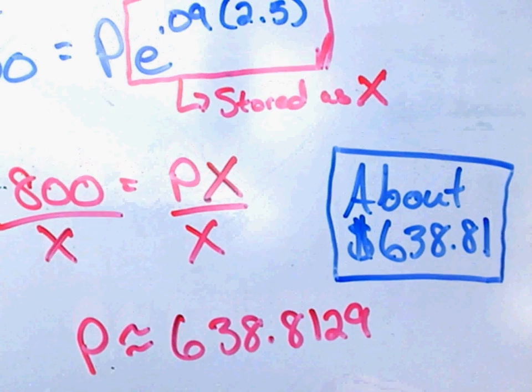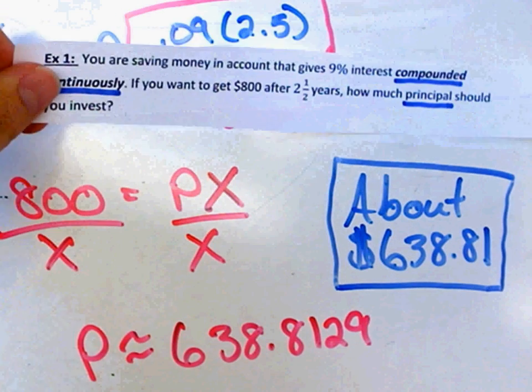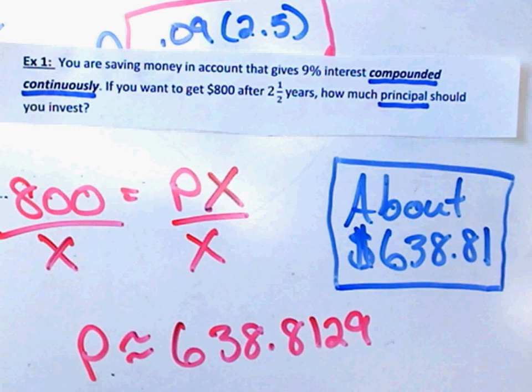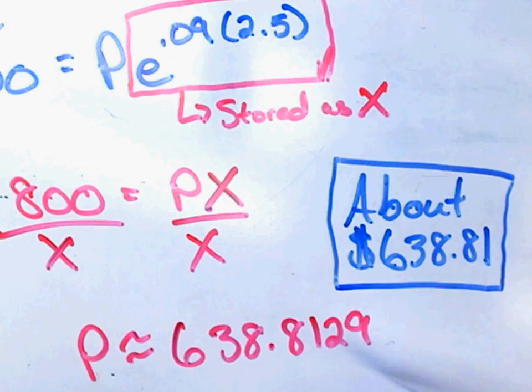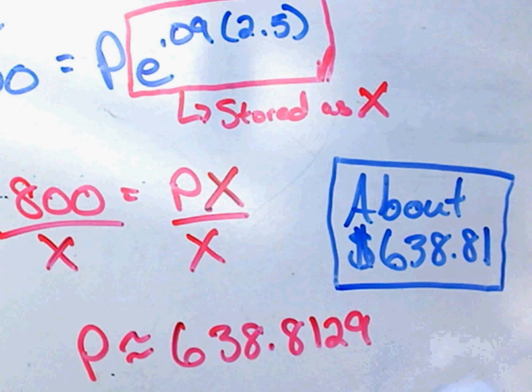Alright, so the amount of principle we need to invest compounded continuously to get $800 after two and a half years is $638.81. I'll give you a second. If you need to take notes, pause the video. But I'm going to move on and we're going to try another one.